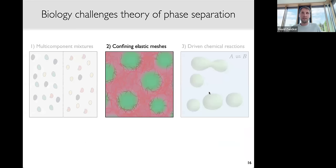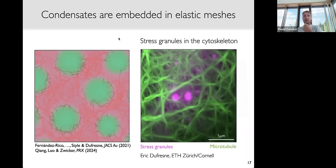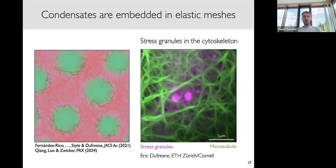I now want to switch gears and talk about material properties and phase separation in elastic matrices. The motivation comes from biology: our collaborator Eric Dufresne at Cornell studies stress granules — little droplets forming inside cells under stress — which typically form within the cytoskeleton, visible here as microtubules in green. To form these droplets you need to make space, and droplets likely can't grow much larger than the mesh size. This system is very complicated — multicomponent, active, and so on.